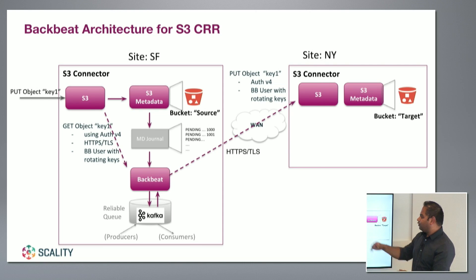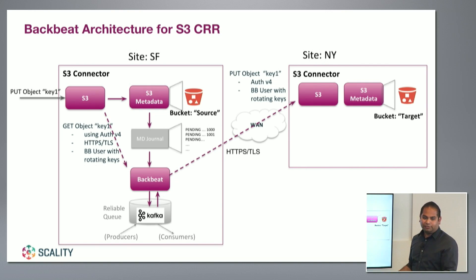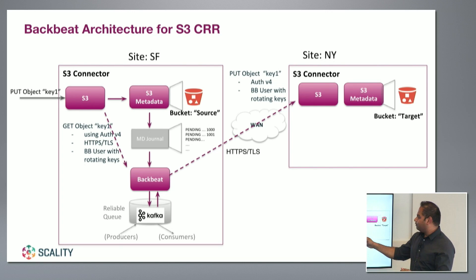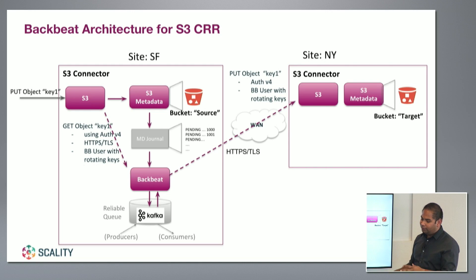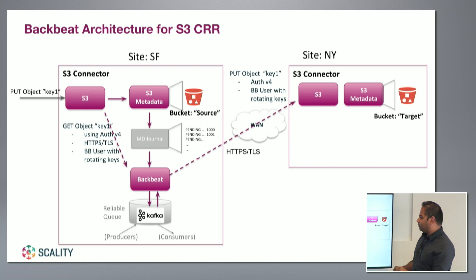You would set up replication. You would have a bucket in San Francisco and a bucket in New York. You have to enable versioning for both buckets — that's a prerequisite for the S3 API. Once you have versioning enabled, you can say: I want to replicate from this bucket in SF to this bucket in New York. During the replication setup, you can say you want to replicate all objects in the bucket, or only a subset of objects with a specific prefix will end up in the target bucket.